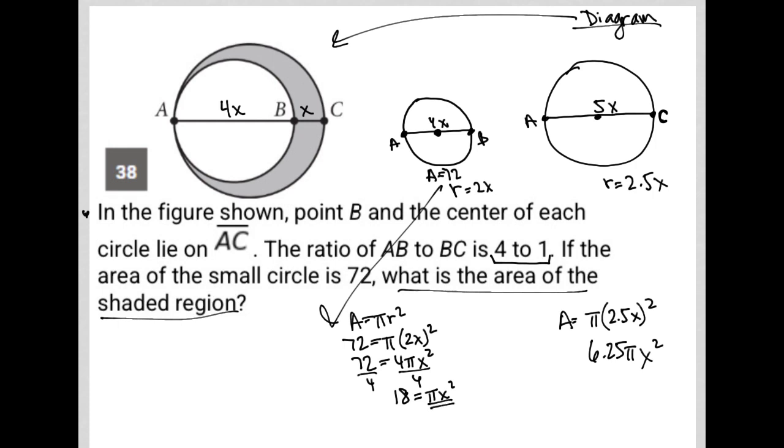Aha! Pi X squared is equal to 18. So I could just plug that in. So 6.25, I was not expecting that. 6.25, I got super excited about that. 6.25 times 18. 6.25 times 18 is equal to 112.5.